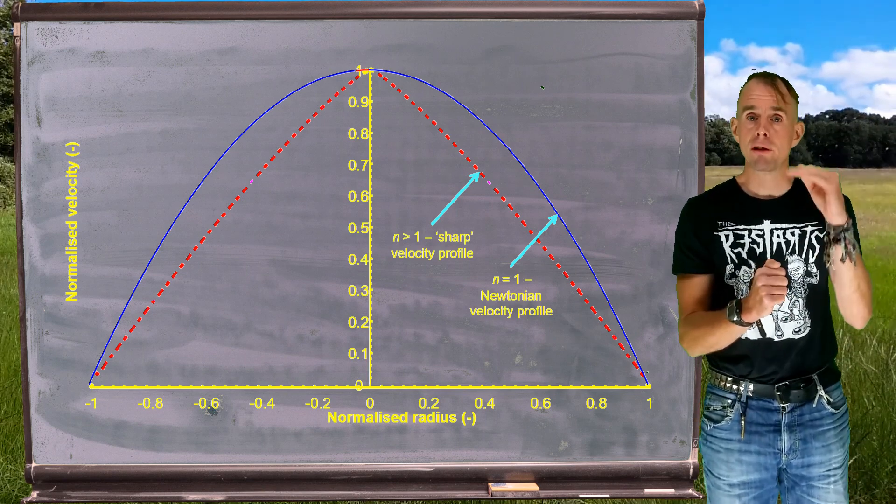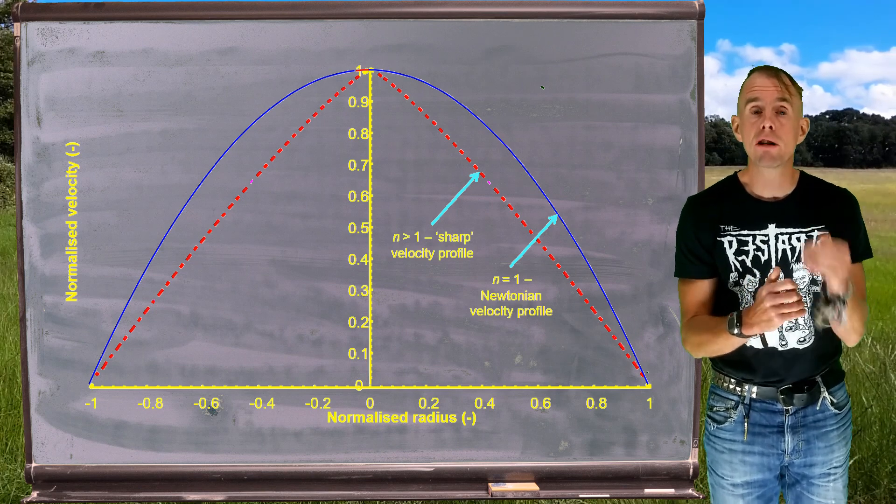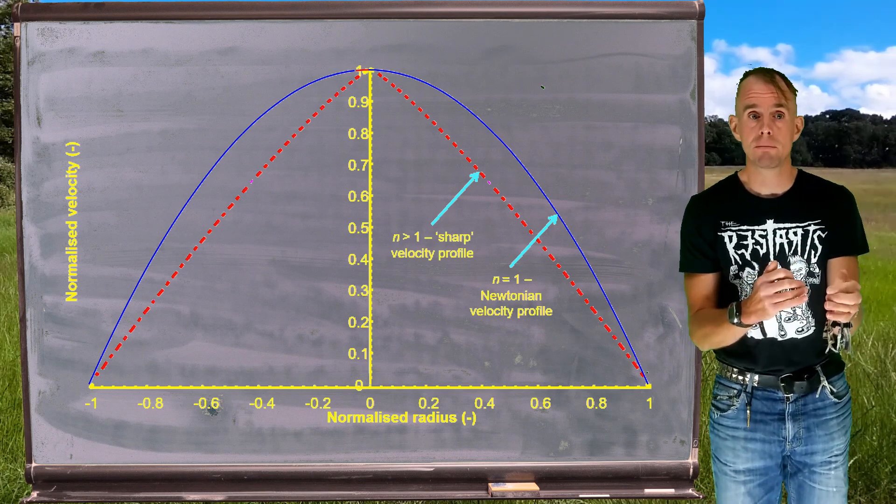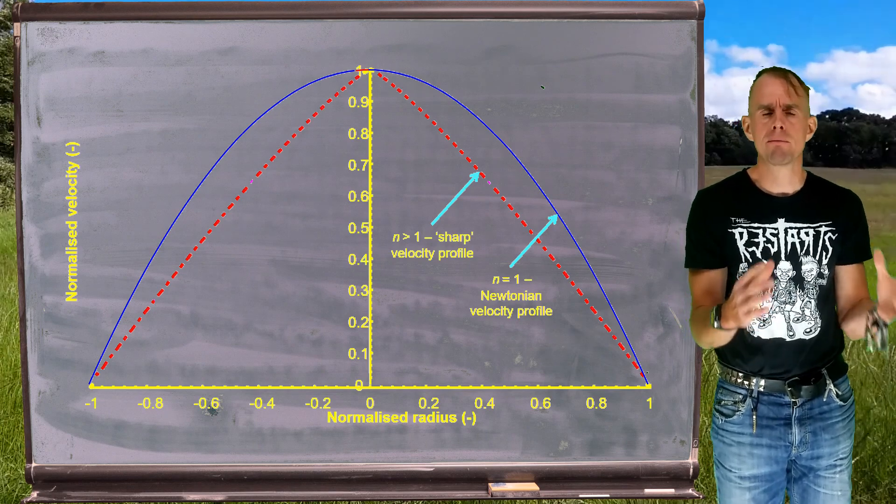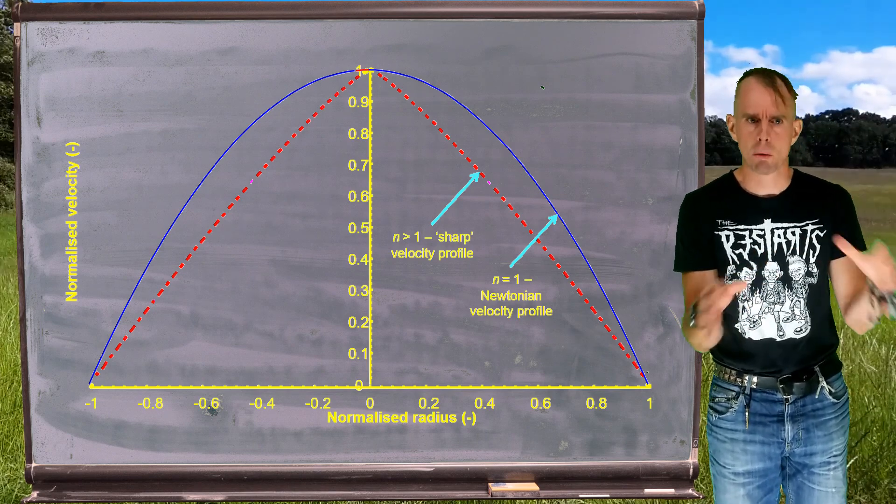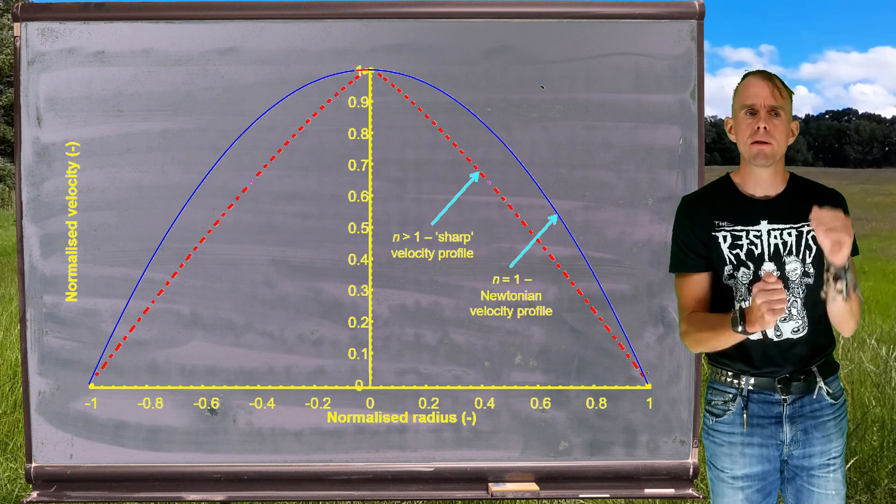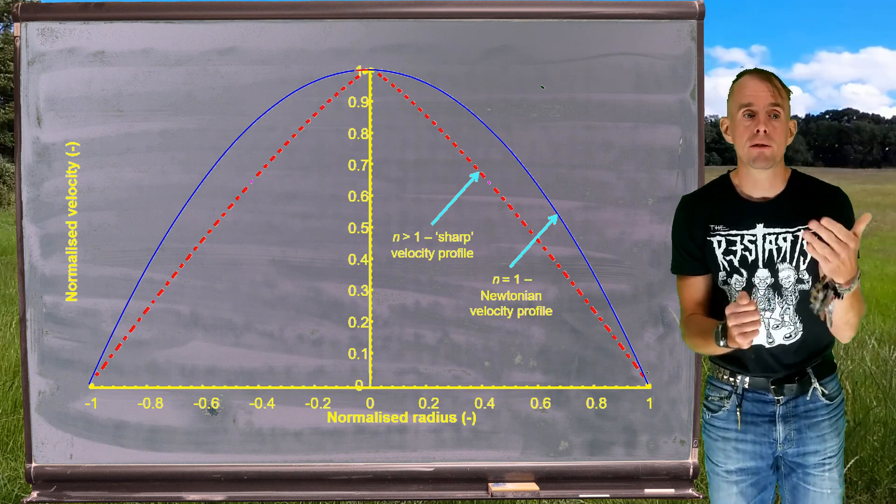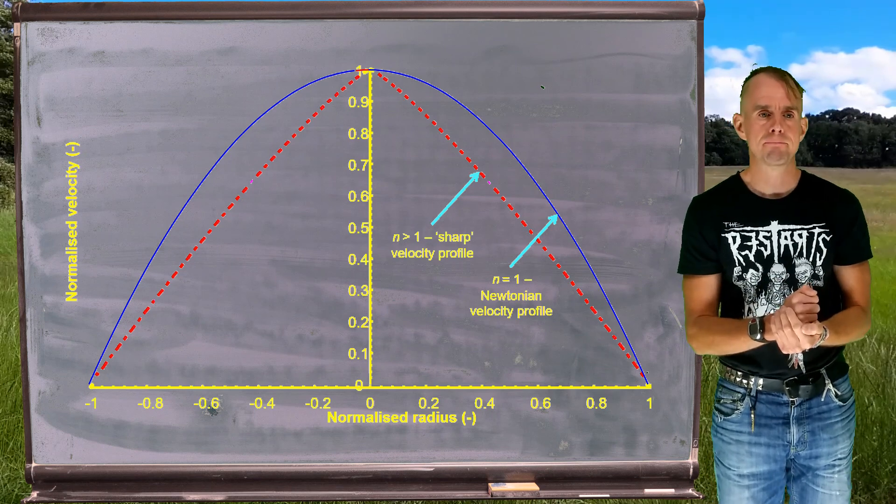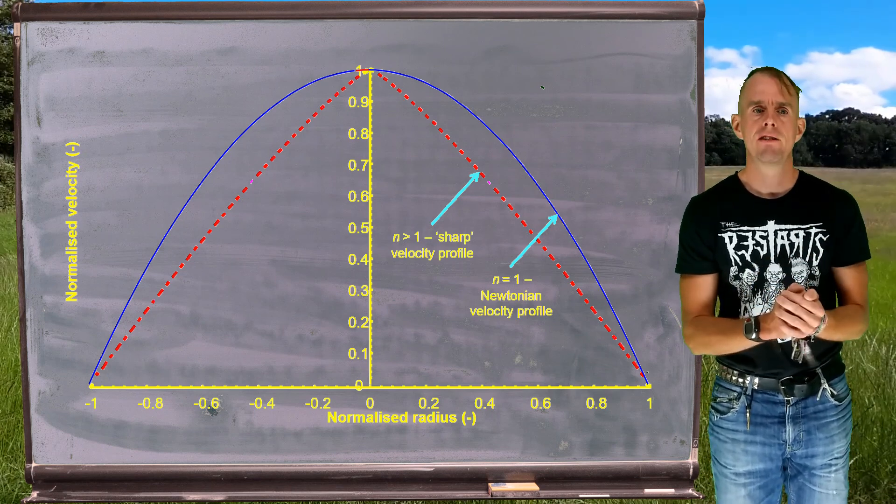Now, remember we're plotting normalized velocity here. If we were plotting absolute velocity, the peak flow velocity would be a lot higher than the same volumetric flow of Newtonian fluid. And actually, if I presented it in that way, the graph would become very skewed and hard to read, so that's why I've normalized it. So do remember that the peak velocities here are higher, even though I'm plotting normalized velocity and they look the same. So there in red is our dilatant fluid.